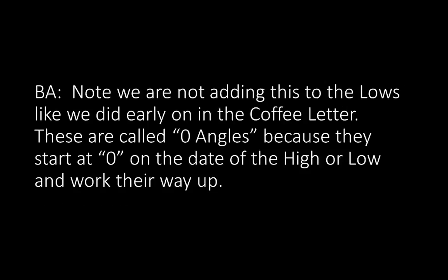Note, we are not adding this to the lows like we did early on in the coffee letter. These are called zero angles because they start at zero on the date of the high or low and work their way up. What do I mean by zero angles? Remember in the earlier videos, he was talking about that low that occurred at 300. If you take that low and put it on a chart with a point at the low on that day at 300, you can start your angle from there — that's what he was doing earlier. Here, he's using zero angles; he's not adding anything in, and we can tell that by the math. A zero angle is: instead of putting a point on the low, you go all the way down to zero on that day and put a point at the bottom of the chart. It starts working its way up as time goes on. That's called a zero angle because it's anchored at zero.